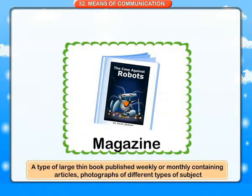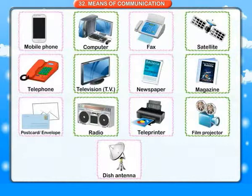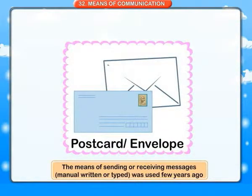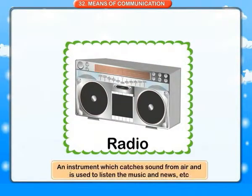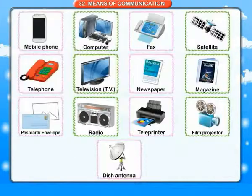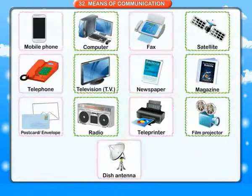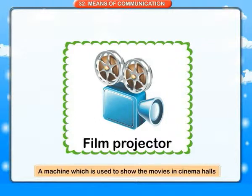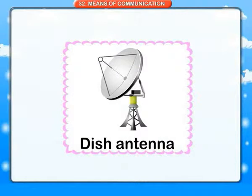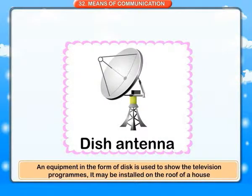Magazine: a type of large thin book published weekly or monthly, containing articles and photographs of different types of subjects. Postcard and envelope: the means of sending or receiving messages, manually written or typed, used few years ago. Radio: an instrument which catches sound from air and is used to listen to music and news. Teleprinter: equipment for automatically printing out messages typed on a machine at another place and sent by telephone lines. Film projector: a machine used to show movies in cinema halls. Dish antenna: an equipment in the form of a dish used to show television programs, installed on the roof of a house.